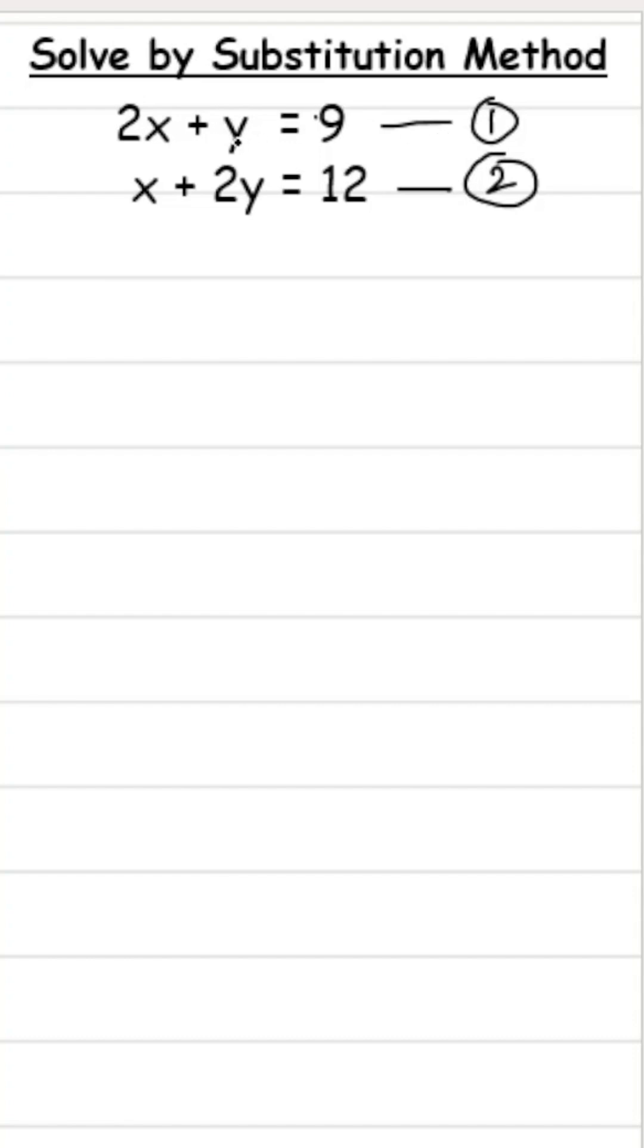Let's solve the first equation for the value of y. So 2x plus y equals 9 will give me y as 9 minus 2x.